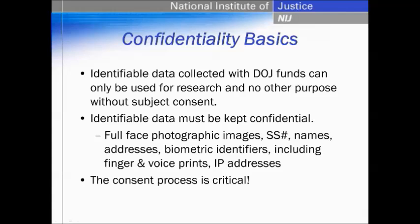Confidentiality basics — all of the identifiable data that's collected with Department of Justice research funds can only be used for research and no other purpose without the subject consent. The subject is welcome to give out their identifiable data to anyone they want to, but if DOJ funded researchers collect it, it can only be used for research and statistical purposes, and it can't be released for any purpose without the subject consent. The identifiable data must be kept confidential. Identifiable data includes IP addresses, social security numbers, fingerprints, voice prints, and biometric identifiers.